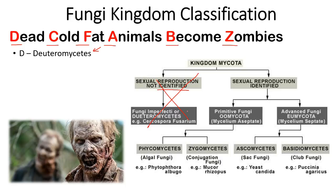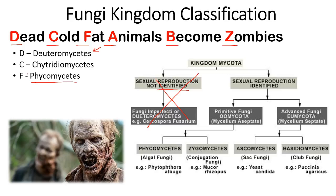The rest of kingdom Mycota have sexual reproduction identified in them. C stands for Chytridiomycetes, which is similar to the Phycomycetes type but is mostly aquatic in nature — aquatic fungi. Then F stands for Phycomycetes, which starts with P but is homophonic with F. Phycomycetes is also known as algal fungi and also tends to be aquatic — marine fungi.